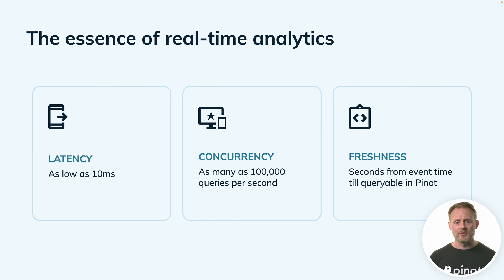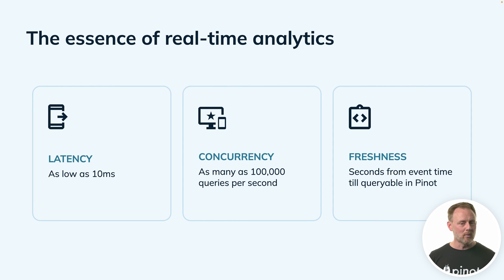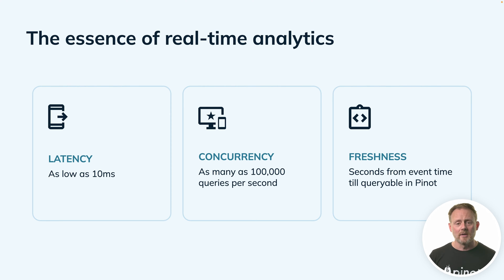To put some meat on the bones here: latency ought to be, in the best case, in the tens of milliseconds — maybe 10, 20, 30 milliseconds. Some queries might take longer, but we can get there. Concurrency — we want to be able to crank that up to hundreds of thousands of concurrent queries per second. So that's one Pinot cluster satisfying hundreds of thousands of queries per second.